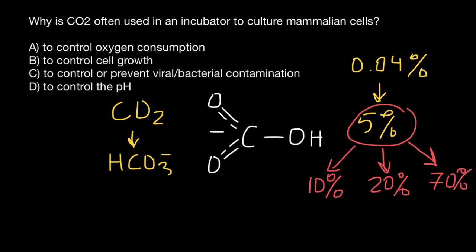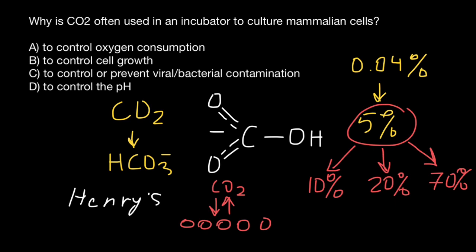By providing 5% CO2 overlay in a cell culture process, you are ensuring that you will roughly maintain 5% dissolved CO2 or bicarbonate in solution. As cells release CO2, lactate, and other pH-affecting ions, the CO2 concentration in solution will deviate from 5%, forcing CO2 into or out of the atmosphere to maintain the balance between the two.